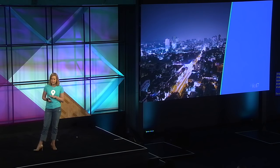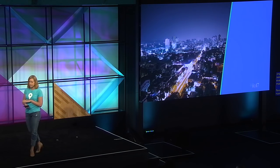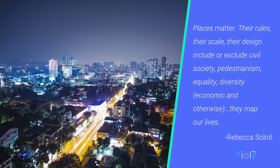My favorite author is Rebecca Solnit. I first encountered her through an atlas she had written with 25 different maps, all of San Francisco. Each map looked at a different layer of data about the city with a corresponding essay. Her big thesis was that a map is not a canonical definition of a place — it's merely a layer of data we choose to represent. You can have infinite maps representing a place. She wrote: "Places matter. Their rules, their scale, their design include or exclude civil society, pedestrianism, equality, diversity. They map our lives."